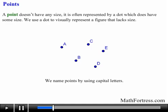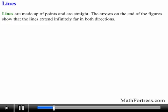All geometric figures consist of points. Another familiar geometric figure is called a line. Lines are made up of points and are straight. The arrows on the end of the figures show that the line extends infinitely far in both directions.